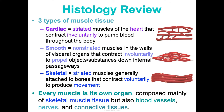A fun fact: every muscle is considered its own organ. Remember, an organ is two or more types of tissue working together for a common function. It's mainly made of skeletal muscle tissue, but there are also blood vessels, nerves, and connective tissues. Skeletal muscles use so much energy that each one has its own nerve for signaling voluntary contractions, plus one artery and one or more veins. We need the nerve for stimulation and the blood vessels to keep the muscle nourished with oxygen and energy.